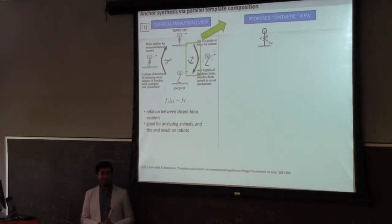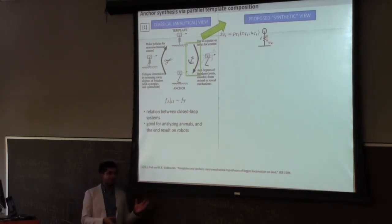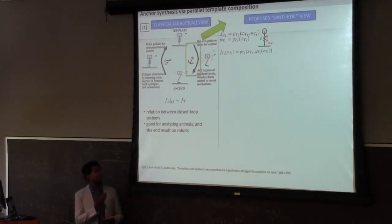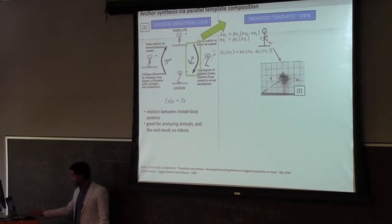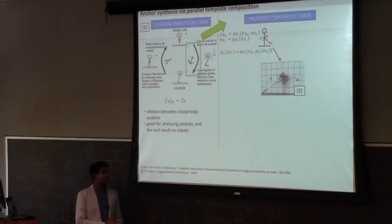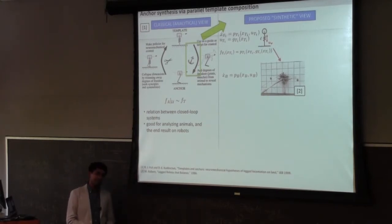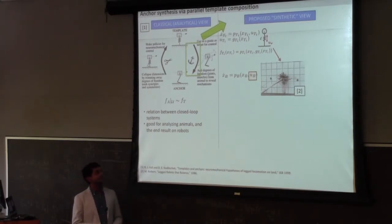Let's propose a synthetic view with a specific example. Here's a vertical hopper — a spring and a mass bouncing up and down. It has an input dynamical system: U is the input and X is the state. Typically we put in a feedback controller so U is a function of state, resulting in a closed loop dynamical system X dot equals F effect. F sub T1 should be similar to the template F sub T we saw before.